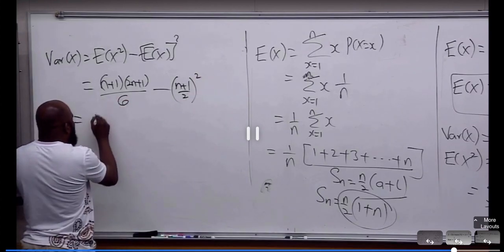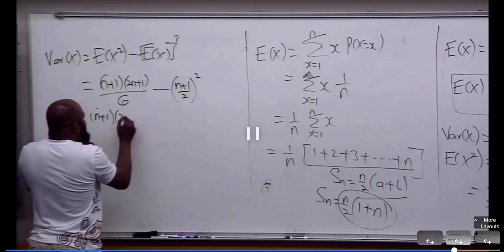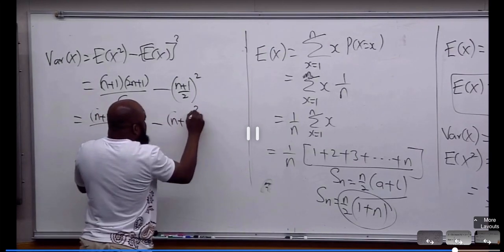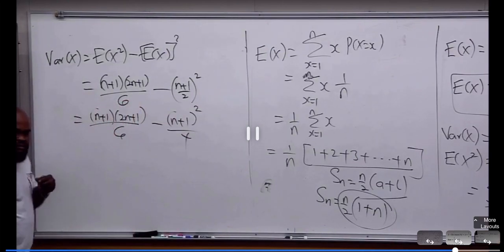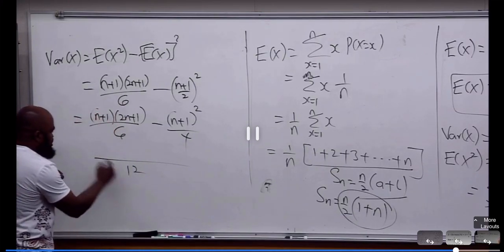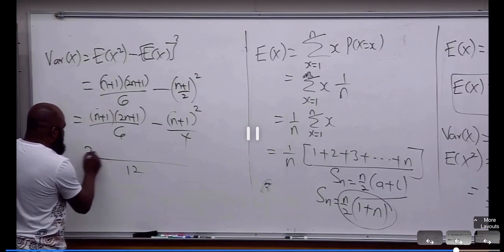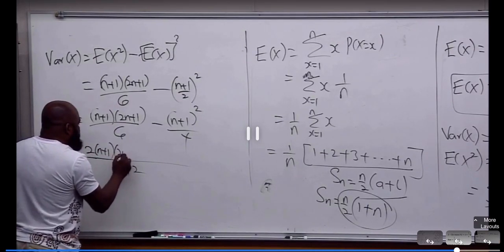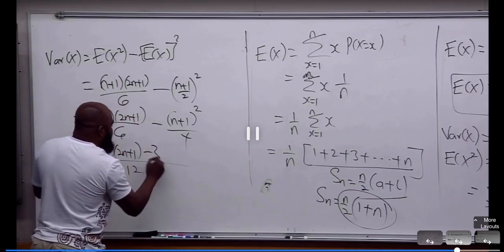So (N+1)(2N+1) divided by 6 minus (N+1) squared over 4. 12, 6 goes here. That's going to be 2 into (N+1)(2N+1). Then 3.